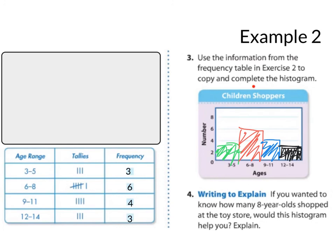Alright, so your histogram should look like this. And you don't need to write this down. But just think, if you wanted to know how many 8-year-olds shopped at the toy store, would this histogram help you? So, no, this would not help you because this gives you a range. It says how many 8-year-olds. Well, I know how many 6 to 8-year-olds. But a histogram gives me a range and not specifics. We'd have to go back to the original data to get that. So, a histogram does not help me with specifics.